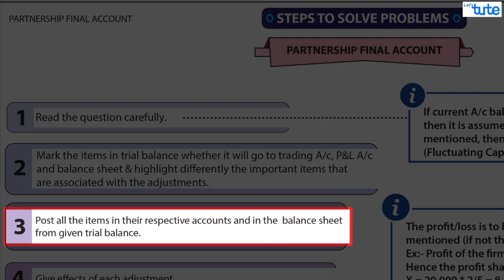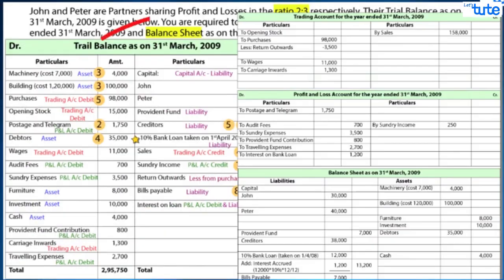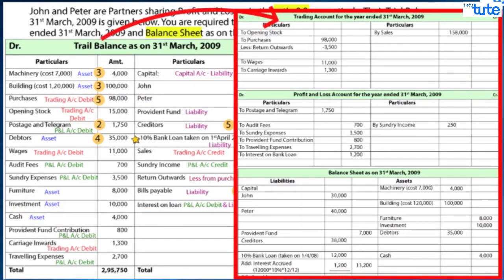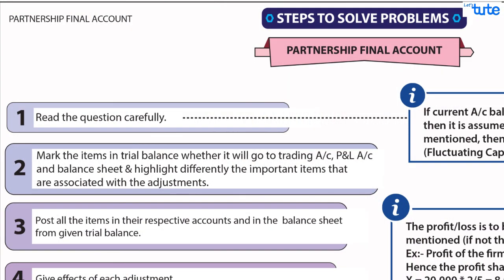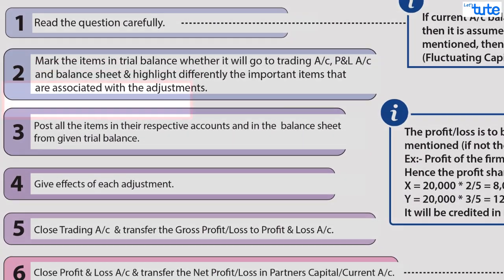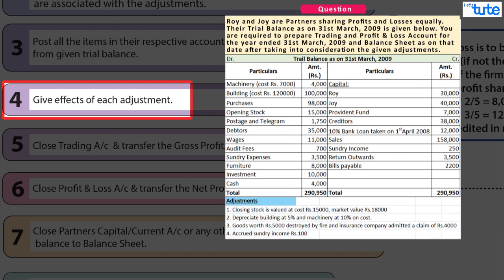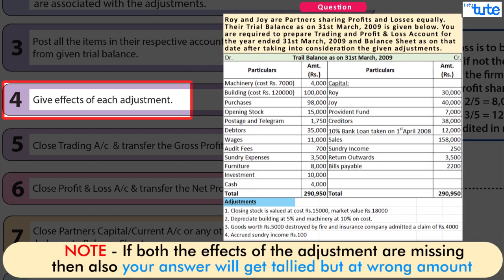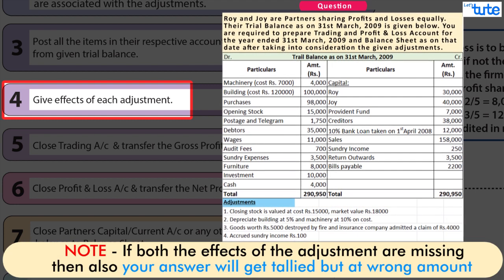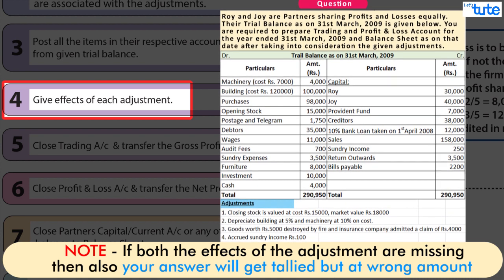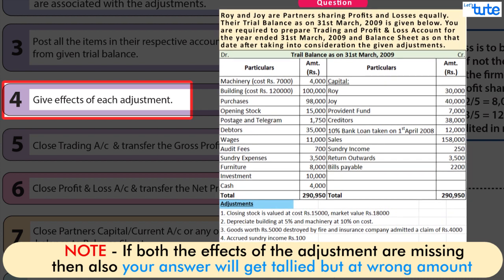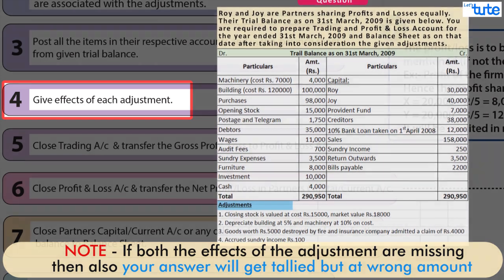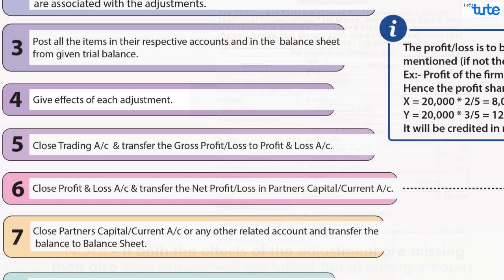Post items from the trial balance with care — this will avoid mistakes and also indirectly help in totalling. Have a check on all the adjustments with their effects. If both the effects of an adjustment are not recorded, your problem will tally but at the wrong amount, so don't forget to give both effects of every adjustment.